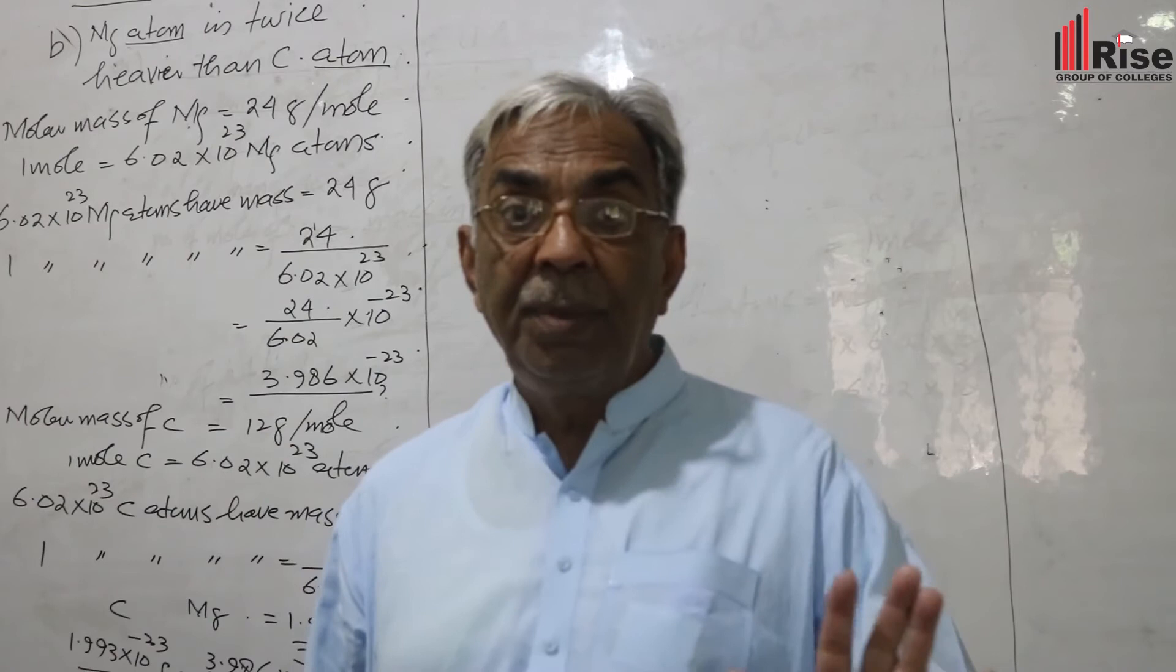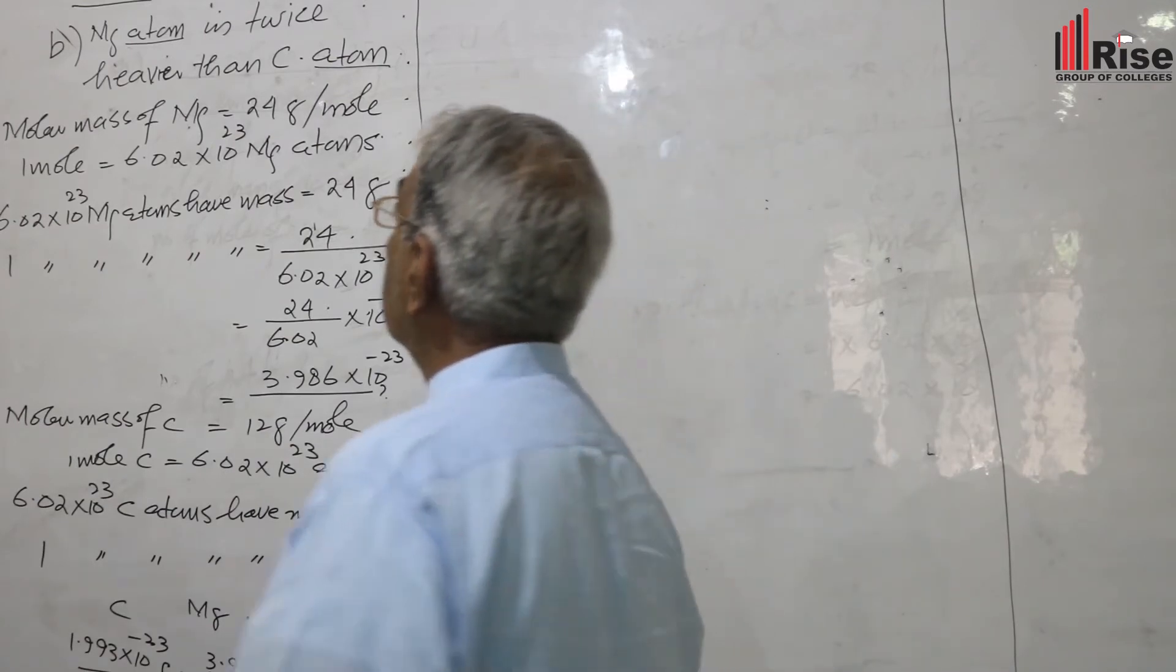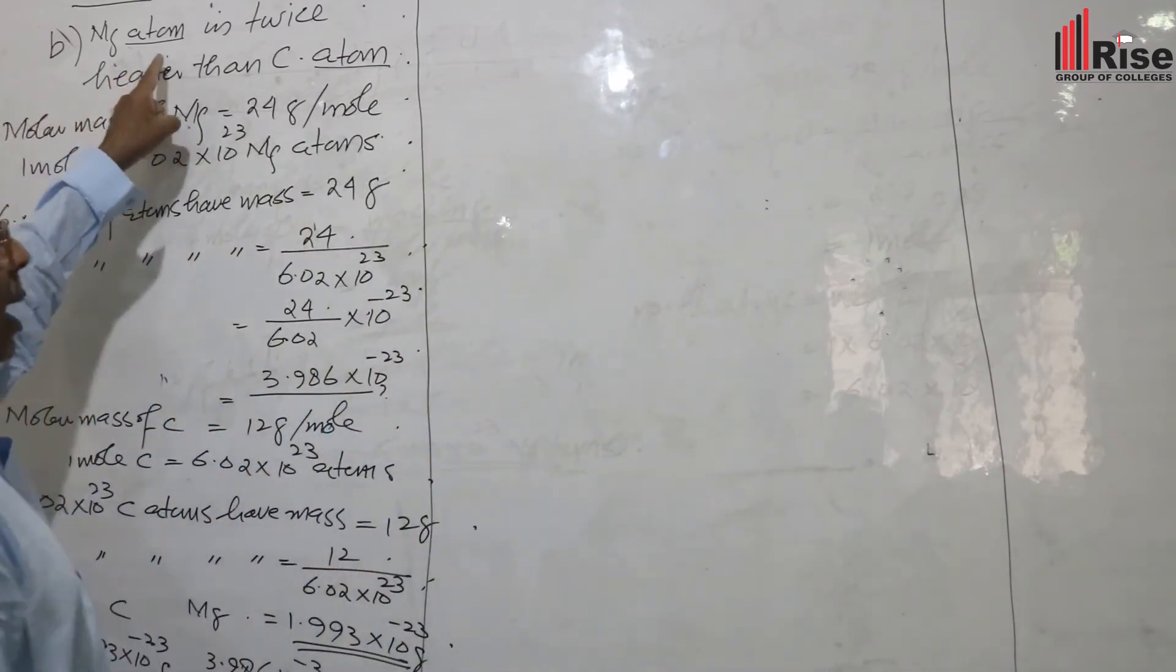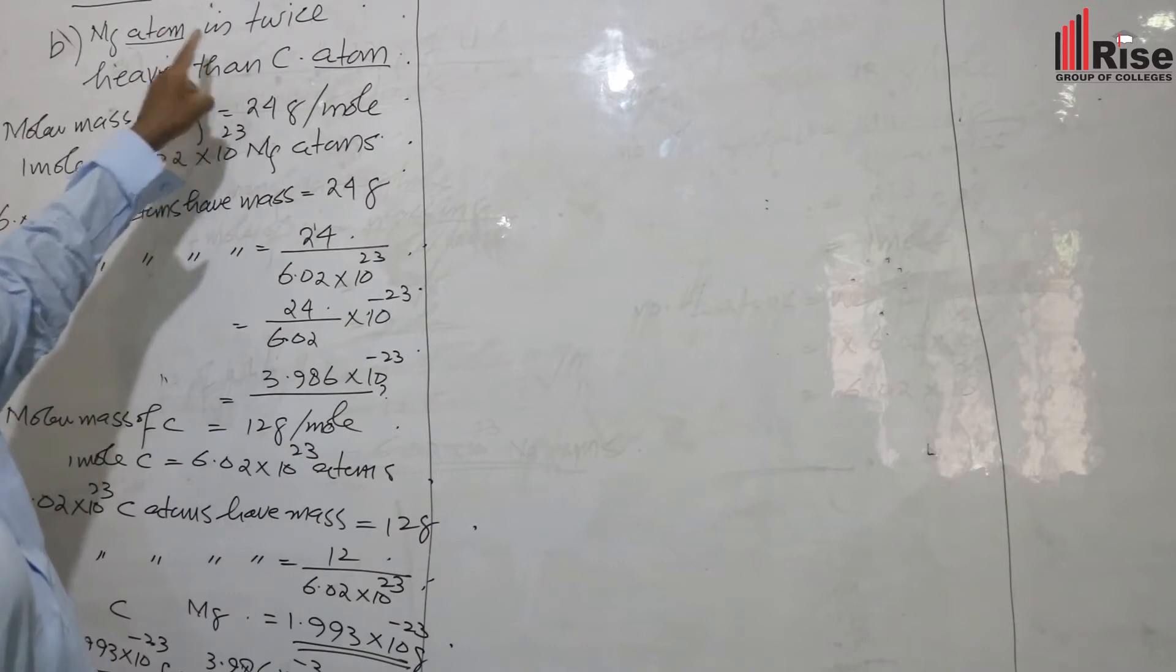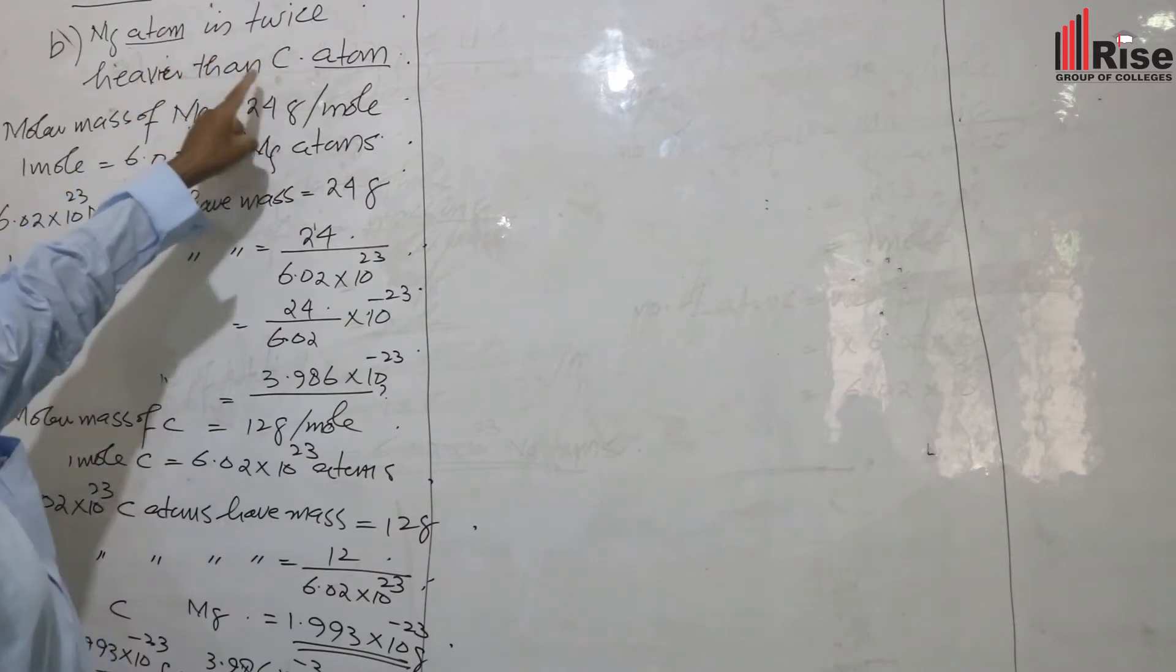Question number 9 part B: magnesium atom is twice heavier than carbon atom.